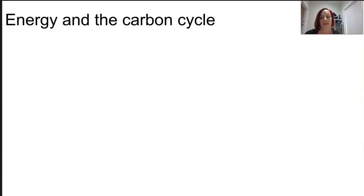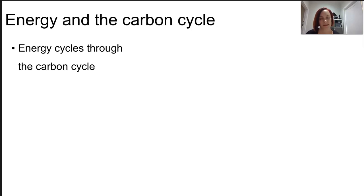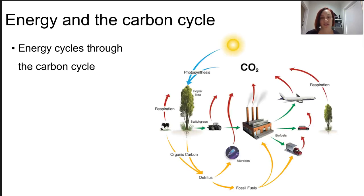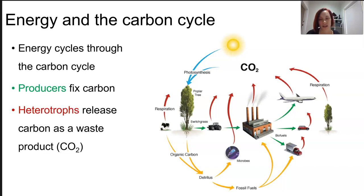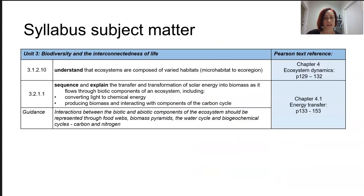As energy cycles from producers to consumers, it plays a role in the carbon cycle. Producers fix carbon into organic molecules, which is then released back as CO2 when heterotrophs consume producers and convert it to their own usable energy. Organic compounds continue up the food chain into different feeding levels as consumers eat one another. This is the subject matter for this topic, so please be aware of this when doing your readings.